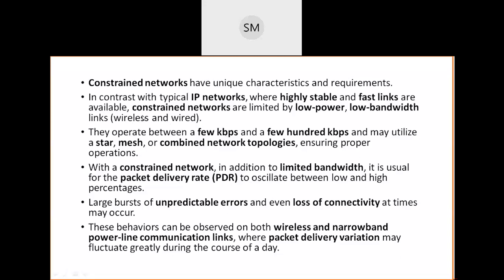Constrained links operate between a very few kbps to a few hundreds of kbps of data transfer. They sometimes use star topology or mesh topology, or a combination of both, for proper operations. Because bandwidth is limited, the packet delivery rate will also be very less and will keep fluctuating.